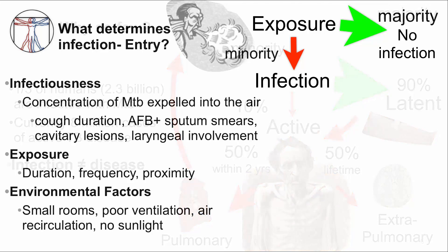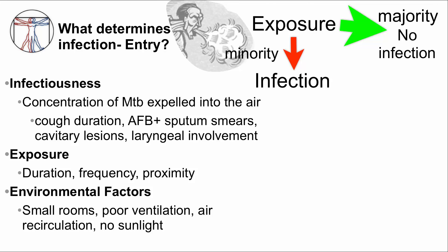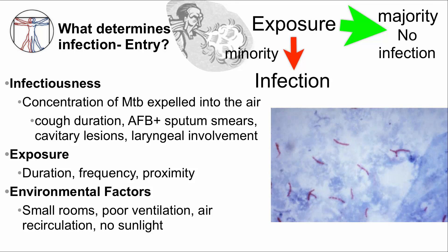Now let's discuss MTB entry. What factors determine whether or not a person becomes infected with MTB? An important factor is infectiousness — that is, what's the concentration of MTB expelled into the air? People with a productive cough for a long time will expel more MTB in the air. In contrast, young children have a less forceful cough and typically don't transmit MTB. People with cavitary lesions and laryngeal involvement typically expel large amounts of MTB into the air. Their sputum usually shows MTB bacilli by acid-fast staining, and is a good marker of high concentrations of expelled MTB. The amount of exposure and the environmental setting are also important factors. Longer, closer, and more frequent exposure, especially in closed indoor rooms with poor ventilation, increase the risk of infection.